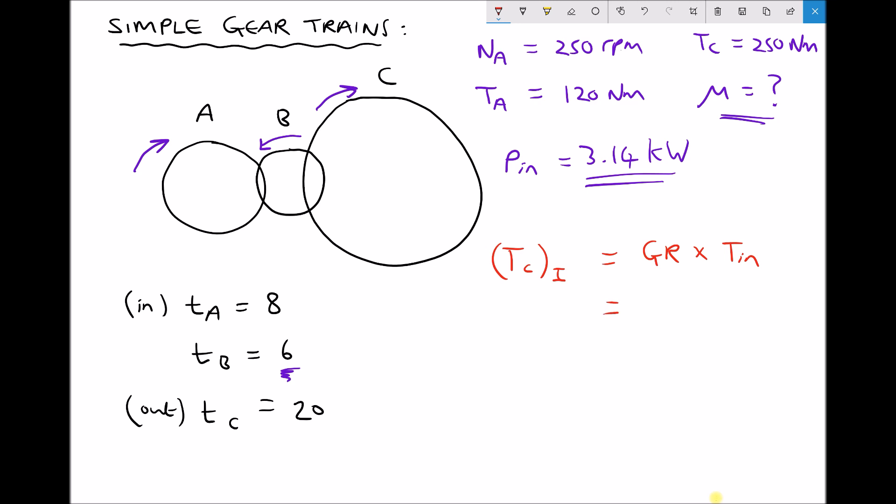And our input torque is 120. 2.5 times 120 gives us an ideal output torque equal to 300 newton meters.